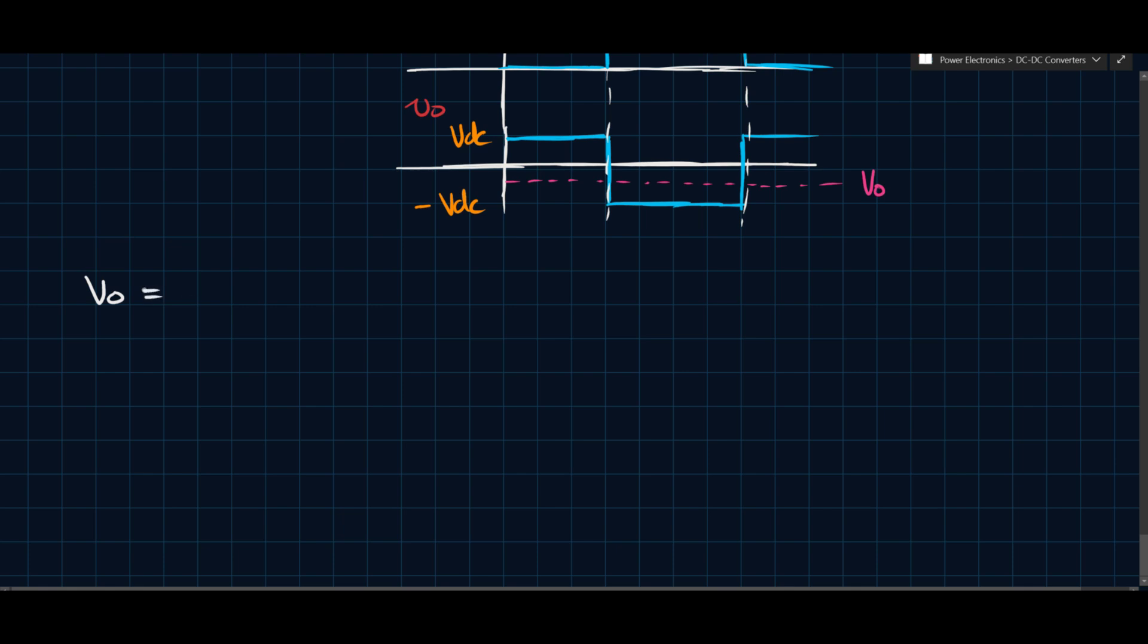And so VO, what is the average? The time average, that is. So the time average is the area of the top plus the area of the bottom, divided by one period. So the area of the top is VDC times DT plus minus VDC times one minus D times T, and that all divided by T.